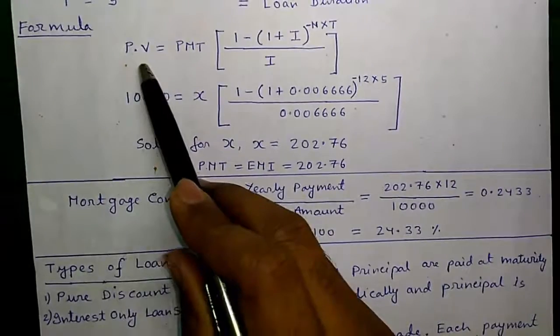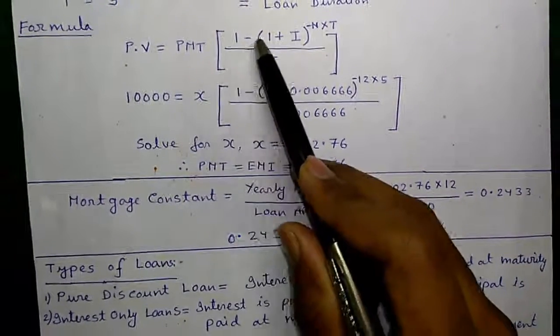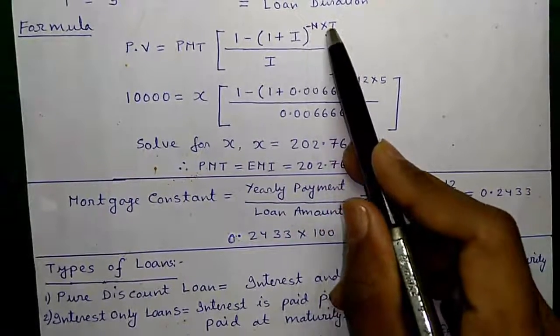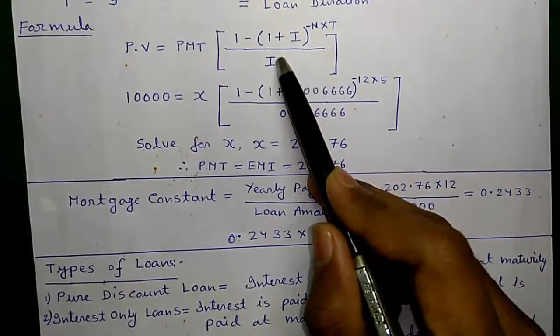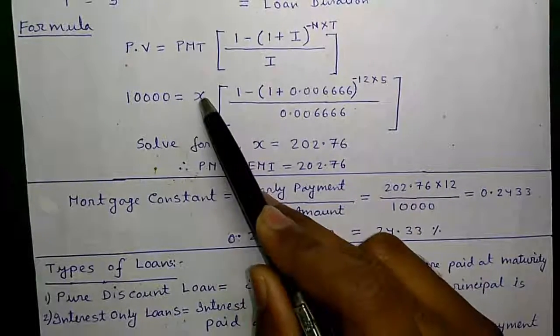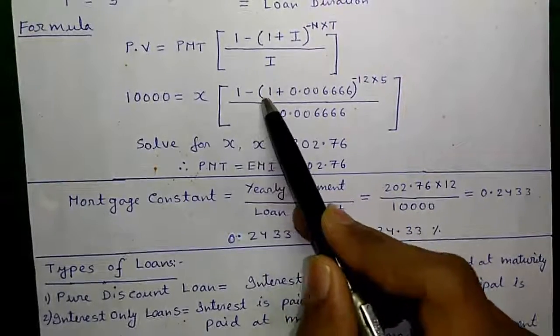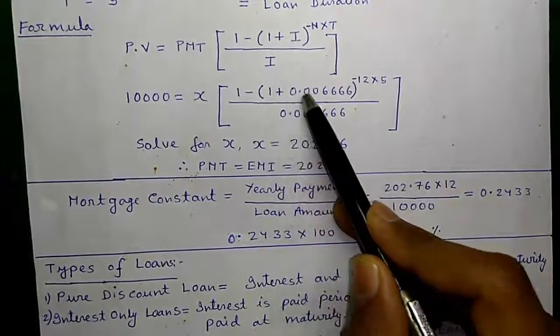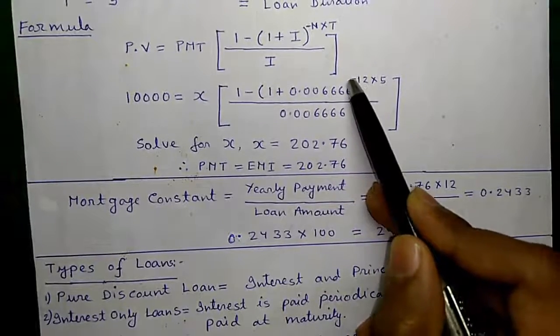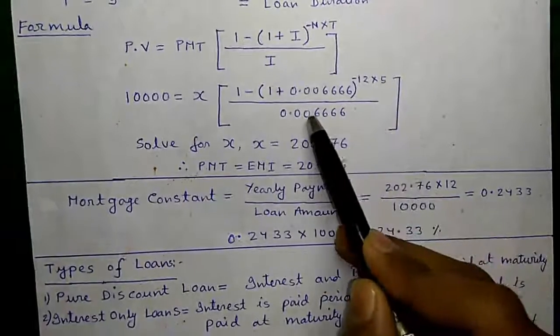Here is the formula: PV or present value equals PMT times [1 minus (1 plus I) to the power minus N×T] divided by I.